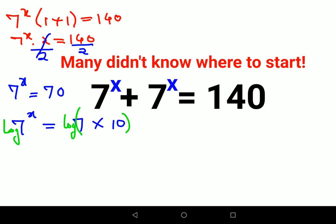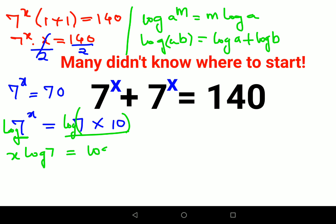Now see here, this looks very much like log of a raised to m which can be written as m log a. And the other part, this one looks like log of ab, so this can be written as log of a plus log of b. So here we can write this as x log 7 equals to log 7 plus log 10.